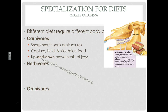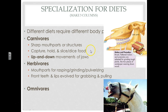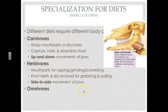Herbivores, on the other hand — those are the ones that have mouth parts for rasping, grinding, and pulverizing. Very different adaptations compared to a carnivore. Their front teeth and lips have evolved for grabbing and pulling food. If you've ever tried to feed a horse, you know the lips are going to get you before the teeth will — very muscular lips. And they have a side-to-side movement of their jaws, which helps them grind and break down all those different plants. That's what those molars at the back are really good for.